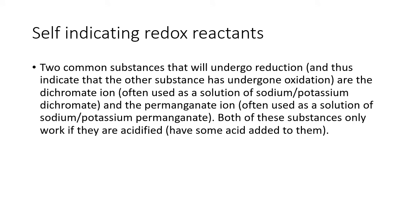Two common substances that undergo reduction and thus indicate whether another substance has undergone oxidation — these are oxidants — are the dichromate ion, used in a solution of sodium or potassium dichromate, and the permanganate ion, used in a solution of sodium or potassium permanganate. Both of these substances only work if they are acidified, meaning some acid has been added. Let's have a look at why.